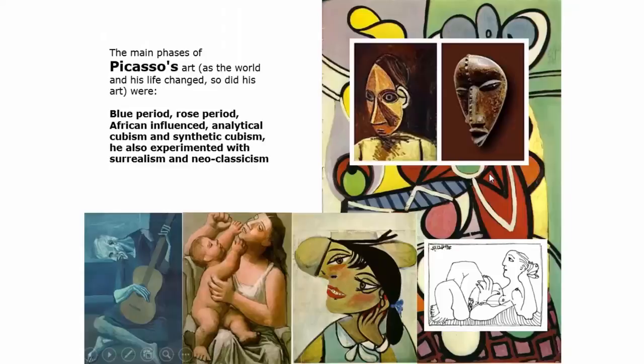Picasso experimented with lots of different media and different styles. He even dabbled with neoclassicism at some point, and sometimes these styles overlapped. He also did sculpture, ceramics, etchings and drawings. He was a very prolific person that was also extremely well connected, which contributed to him being so successful during his lifetime, and he became a household name.